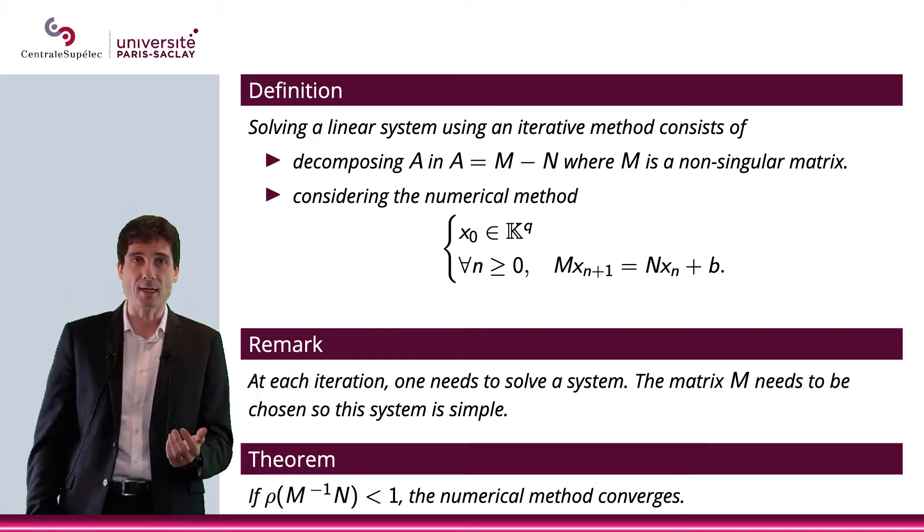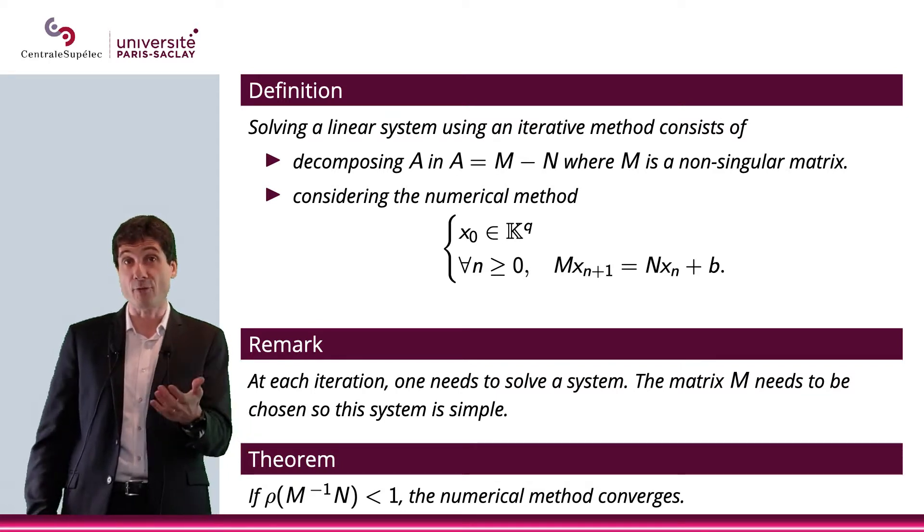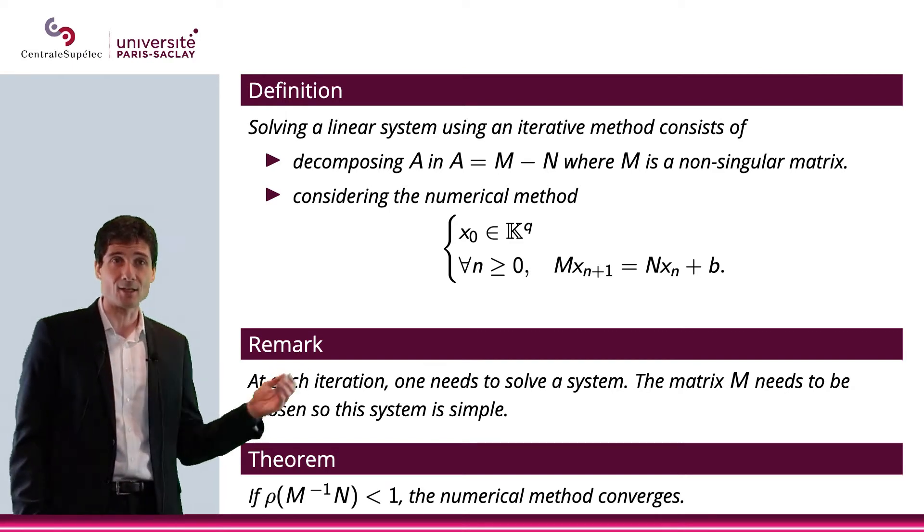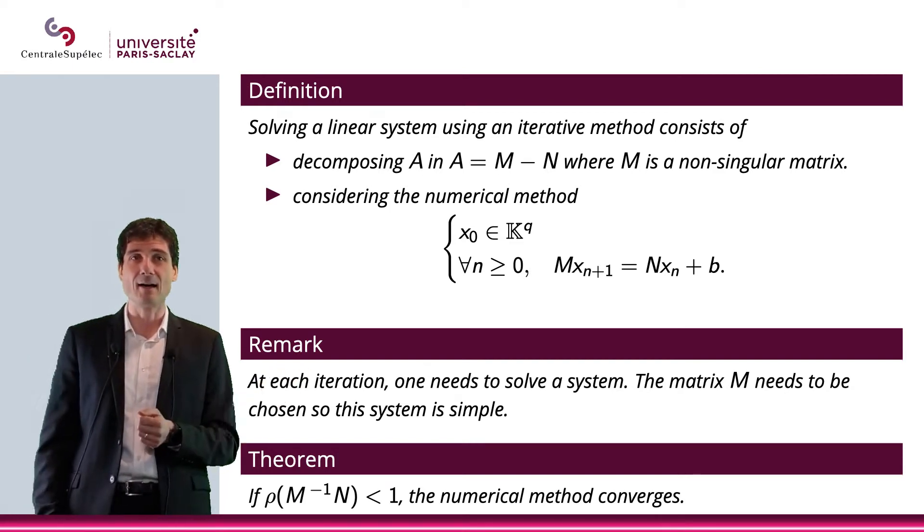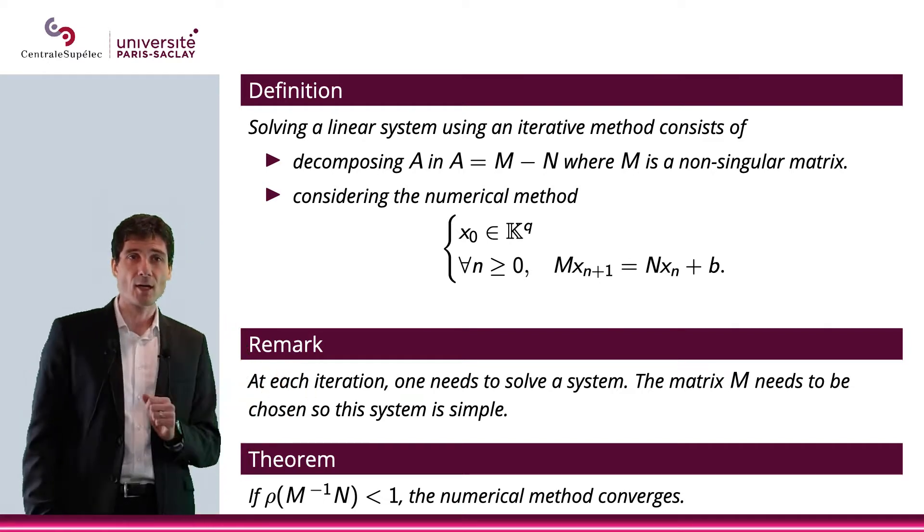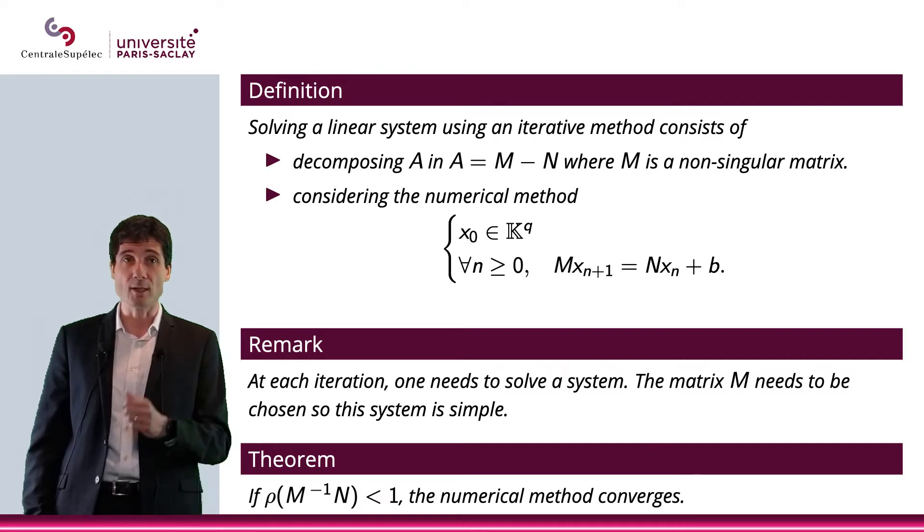For instance, you can take a diagonal matrix or a triangular matrix, and if you do this, then hopefully it will be easy to solve this linear system. Much easier, obviously, than solving Ax equals b. So first remark is that each iteration you need to solve the linear system, but you're the one choosing M, so you need to do this accordingly.